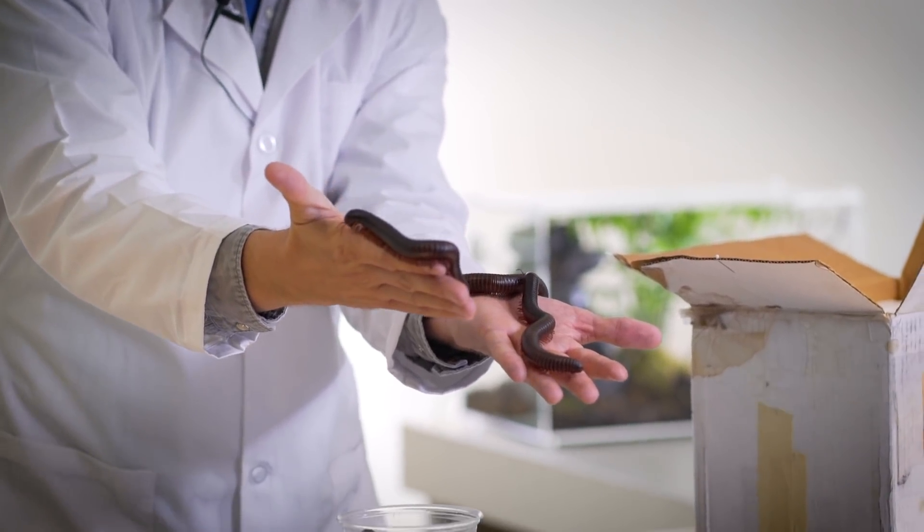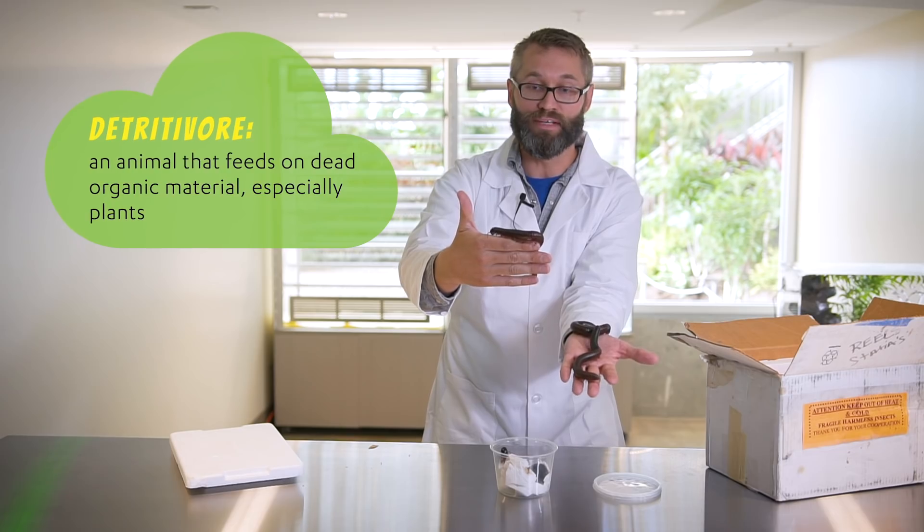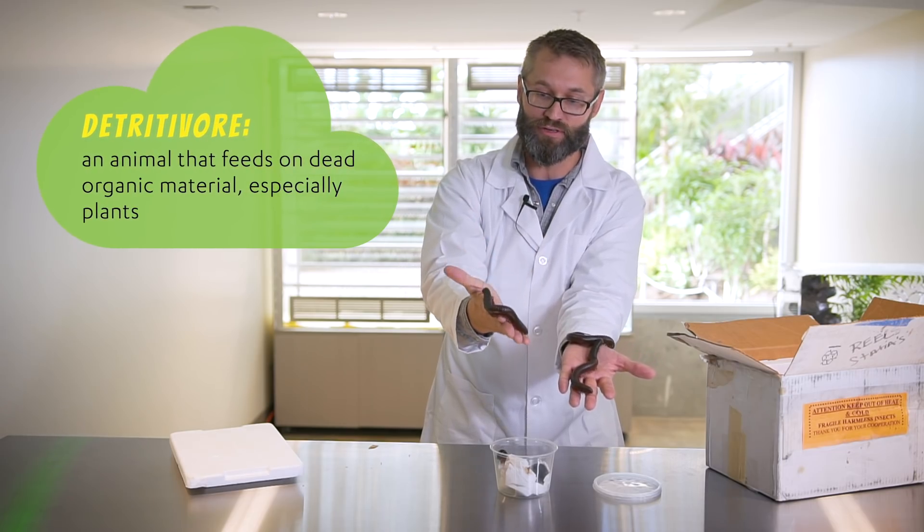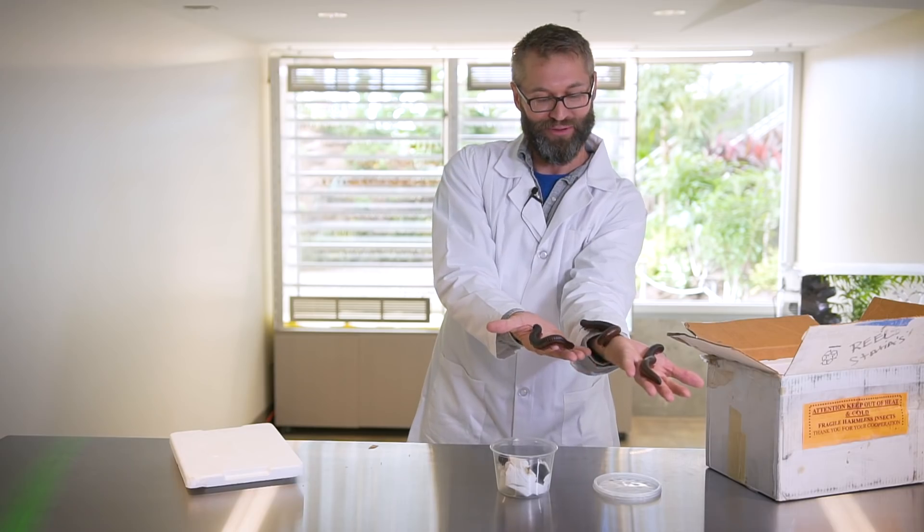These guys are detritivores, so they're gonna be crawling through the forest floor, eating up leaf litter and fruits and things that fall out of the trees. So they're in there helping recycle the forest. Where are you going, little guy?